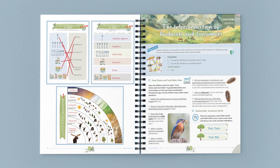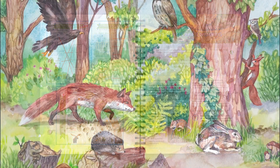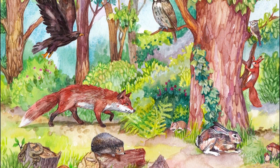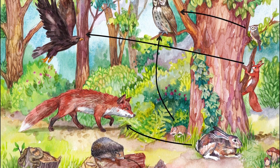Let's take a look at one of the lessons in this unit. This is lesson four: the interconnection of producers and consumers. Near the beginning of the lesson is a preparation and supplies list, giving you a quick look at what is needed for the lesson. This lesson begins with a wonderful video about the food chain and food web.